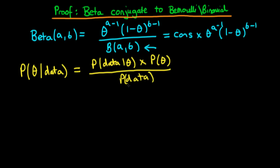We notice that the denominator here is independent of the choice of theta, so it doesn't depend on theta. So what we can actually do is rewrite this as just being proportional to the numerator: the probability of the data given choice of theta times the probability of theta, the prior. We're forgetting about the denominator because it is a normalizing constant and importantly it is the same for different values of theta.